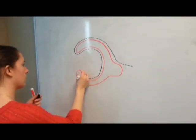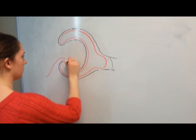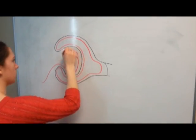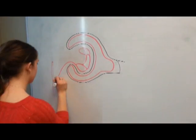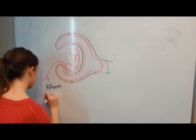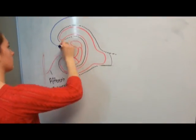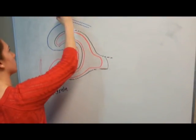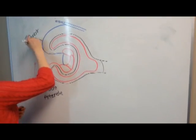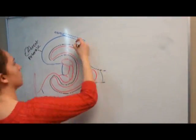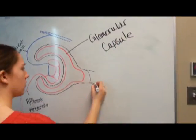The glomerulus is a cluster of blood vessels around the end of a kidney tubule. It is where waste products are filtered from the blood. The blood is cleaned out by the process of filtration in the kidney. Glomerular filtration is the first step in urine formation.